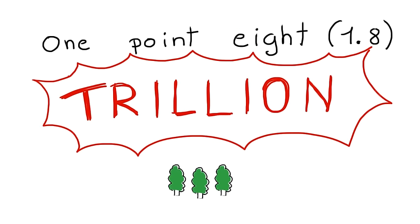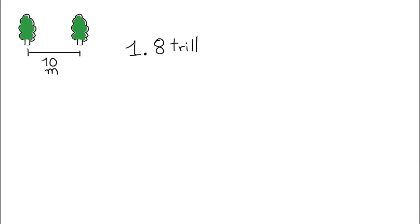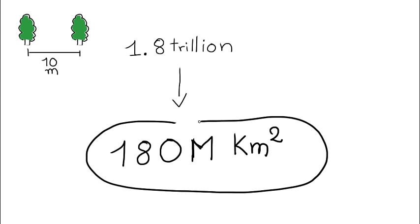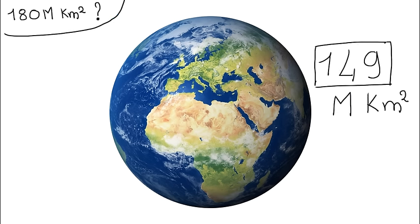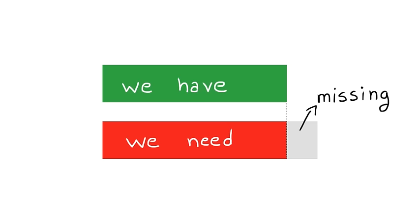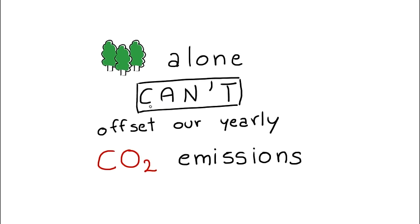Okay, so how much is that? If we assume the optimal spacing between trees of about 10 meters, 1.8 trillion trees require 180 million square kilometers of land. Okay, that doesn't help. What the heck does that mean? If we look at planet Earth, the total amount of land area is only 149 million square kilometers, which makes the tree takeover plan physically impossible. See the problem there? The sad reality is that trees alone cannot offset our yearly CO2 emissions.